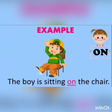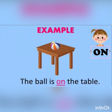On means upar. Examples of 'on': The boy is sitting on the chair — boy kaha hai? Chair ke upar. So sentence mein position word hai 'on'. The ball is on the table — ball kaha hai? Table ke upar. So the position word in the sentence is 'on'.